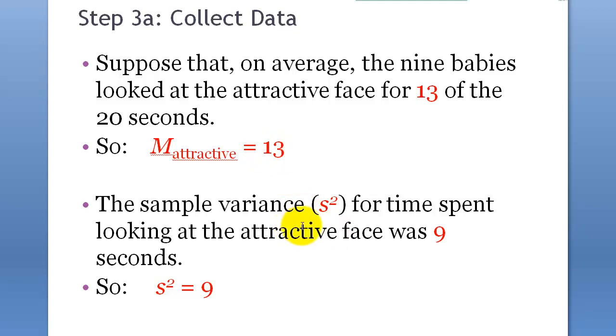And, the sample variance for time spent looking at the attractive phase was nine seconds. How do we calculate this? We don't have the data, but the table is on the textbook. So, if I look at the textbook, we can calculate the sample variance from, it's a several square divided by n minus one, right? So, that's how we do it. And, that's nine.